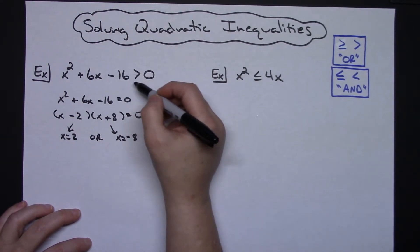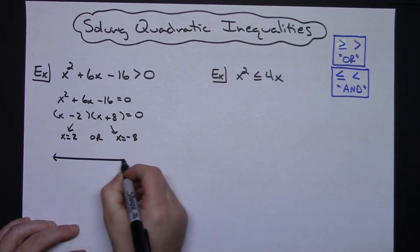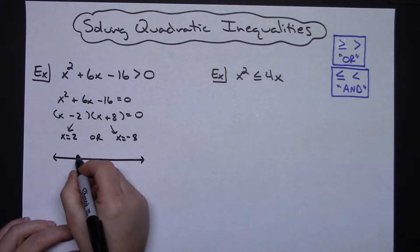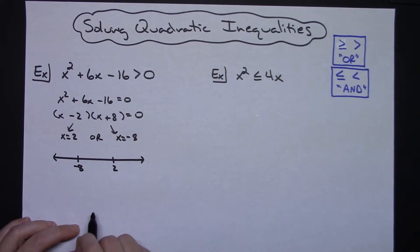Now, we do have to remember I just set this equal to zero just so I could solve it so I'd know where to put my numbers, but it's an OR. So really, thinking of this on my number line, I'm going to have a negative 8 down here, I'm going to have a 2 right here.